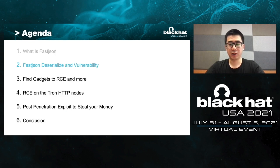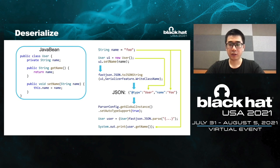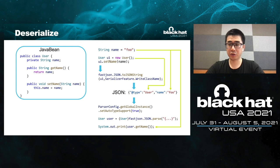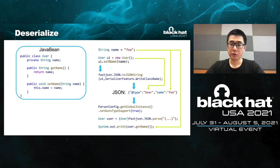In this part, I will detail the deserialization process and security check in FastJSON, and the vulnerability to bypass the check. First, here is a demo for JSON serializer and deserializer using FastJSON. On the left side, there is a Java bean named 'user' with a String field 'name', and the getter and setter for name. On the right, we create a user object and set name to 'full', using method JSON.toJSONString with flag to serialize the feature, writing the class name to serialize the user object to JSON string.